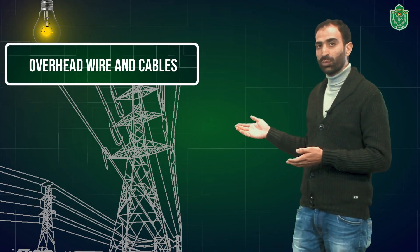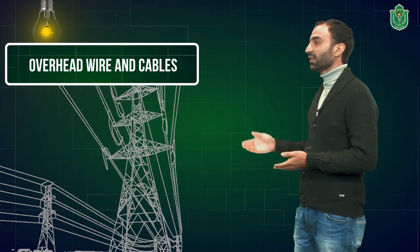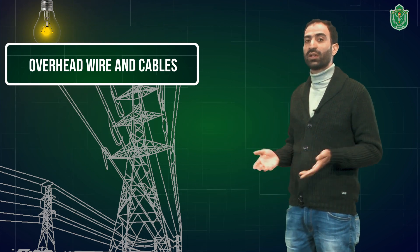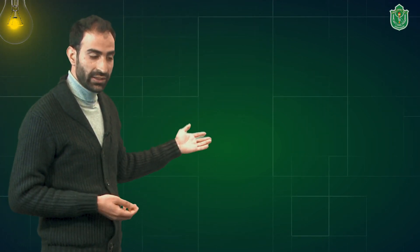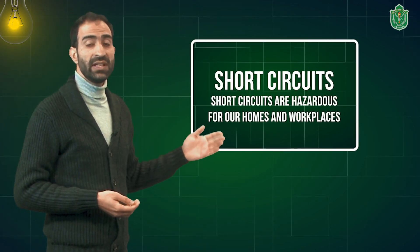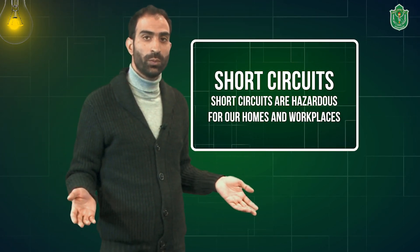The electricity that reaches our homes comes through overhead wires and cables. The amount of electricity coming to our home is not always the same — it varies, and sometimes it becomes too high. At that instant, the heating effect may be too high and may cause short circuits, which can be very hazardous for our homes as well as our workplaces. In order to overcome this issue, we use a fuse in our homes and in our various electrical appliances.